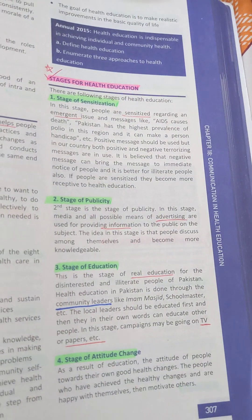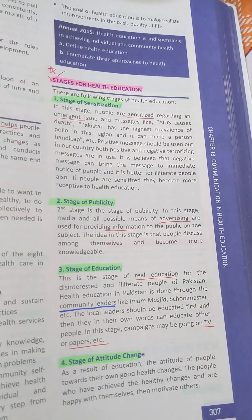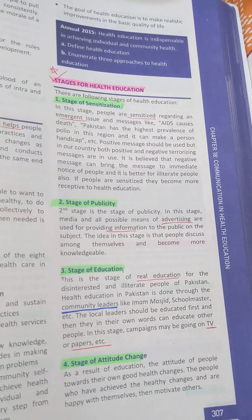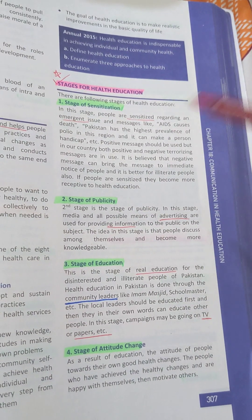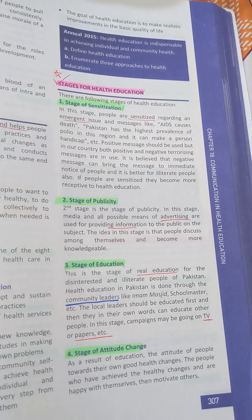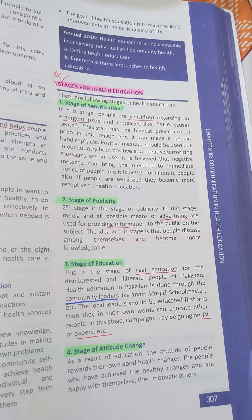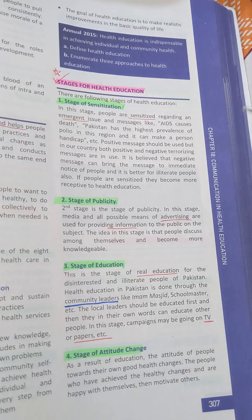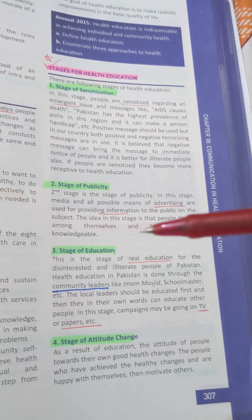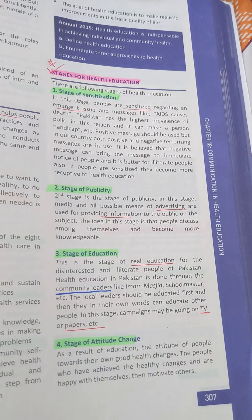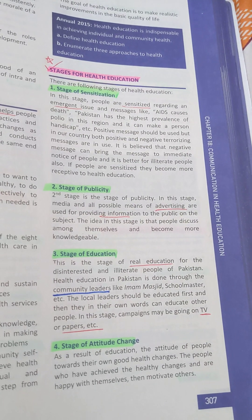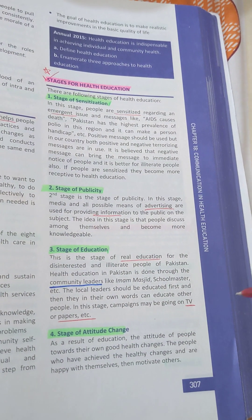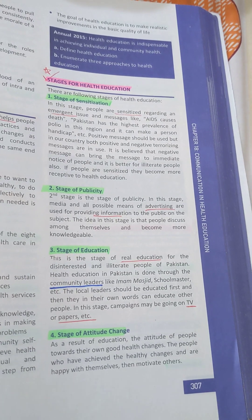Stage one is the stage of sensitization. We have to sensitize the general population so that they can hear the words. Stage two is the stage of publicity — we have to disseminate the health message to the general public to get some awareness. Stage three is the stage of education, where we have to properly educate through campaigns and provide proper knowledge.